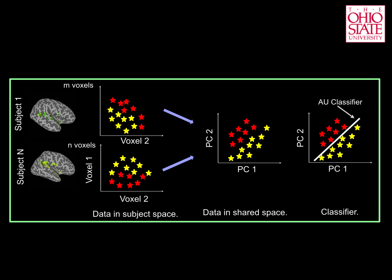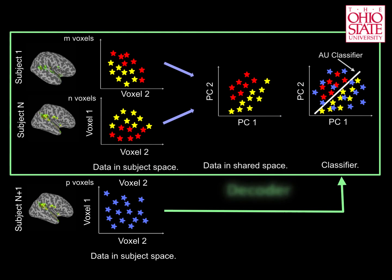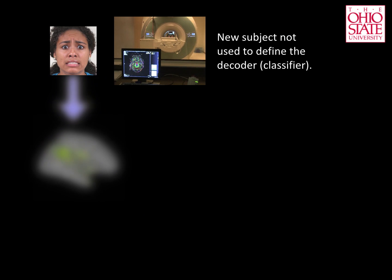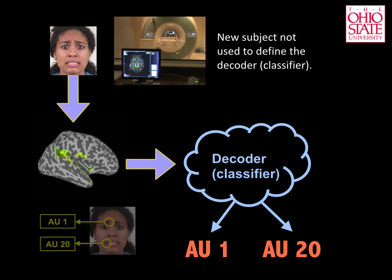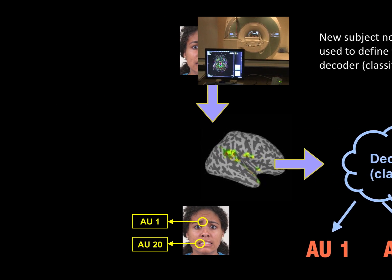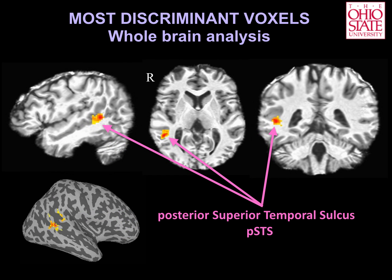When we have data from an independent participant who was not used during the training phase, we talk about testing. During testing, we do not know which acquisitions correspond to images with a specific AU present and which don't — this is indicated by the blue colored stars. After projecting the blue stars from the subject-specific space to the aligned representation, we see which ones are on the red side, indicating the AU is present, and which on the yellow side, indicating the AU is not present. Hence, we can now ask you to get in the MRI, and while we show you images, our computer can look into the neural activity of your brain and robustly and fully automatically identify which action units you are looking at. The computer only needs to look at the red and yellow voxels shown here. These voxels are in the PSDS, and thus these results support our hypothesis of a neural mechanism for the recognition of action units in this brain region.